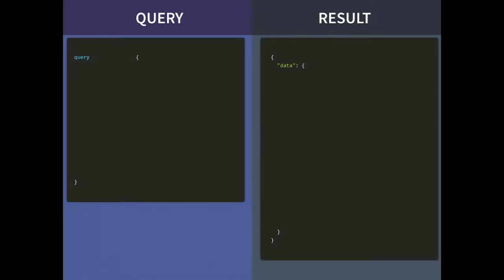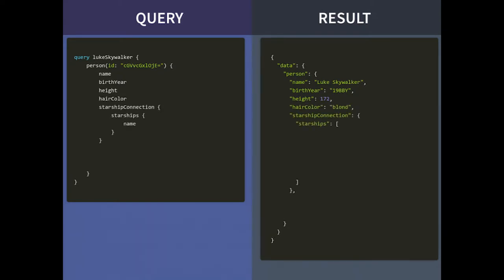Everything you do in GraphQL starts with a query — and then you have a result. Things start getting more structured: you always start with a keyword, 'query', just like talking to a database. You give it a name. On the response side, you always have the 'data' key as the first key from your query response. Then you start putting information: asking for a certain person by ID, then asking for specific fields — name, height, hair color — and that's where things start to get interesting.